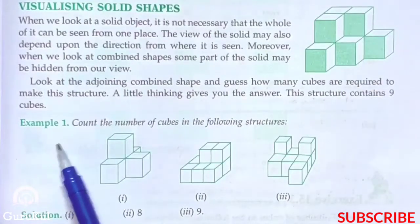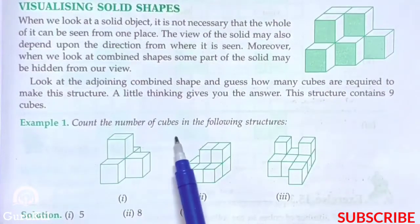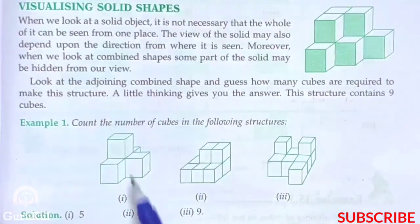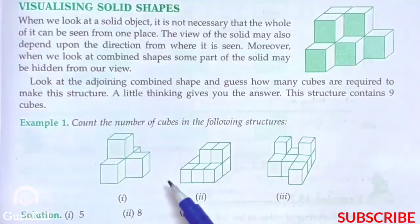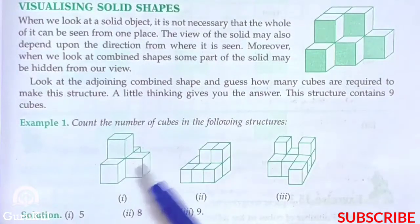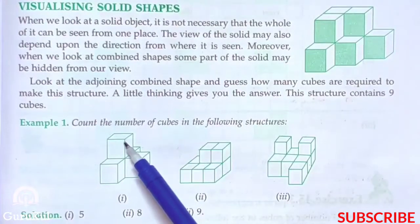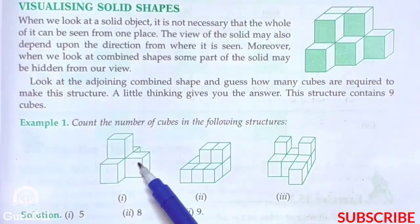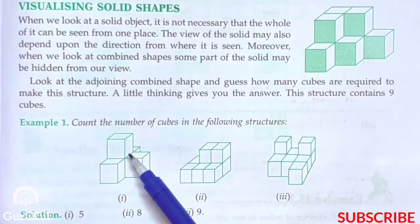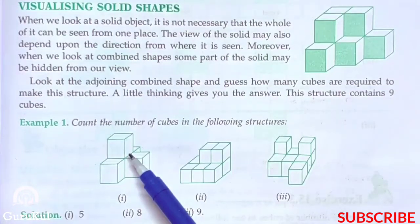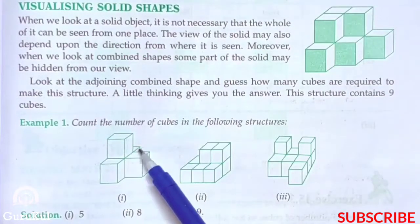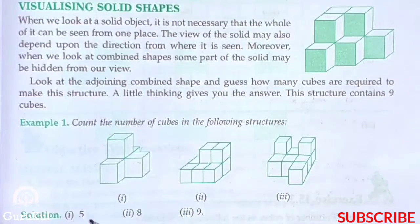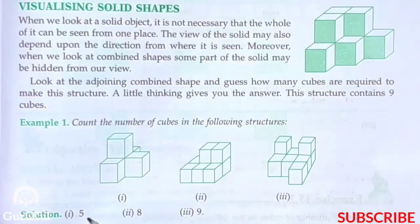Here is Example 1: Count the number of cubes in the following structure. For the first one, counting gives us 1, 2, 3, 4 — but the second layer adds up to 1, 2, 3, 4, and 5. So the answer is 5.